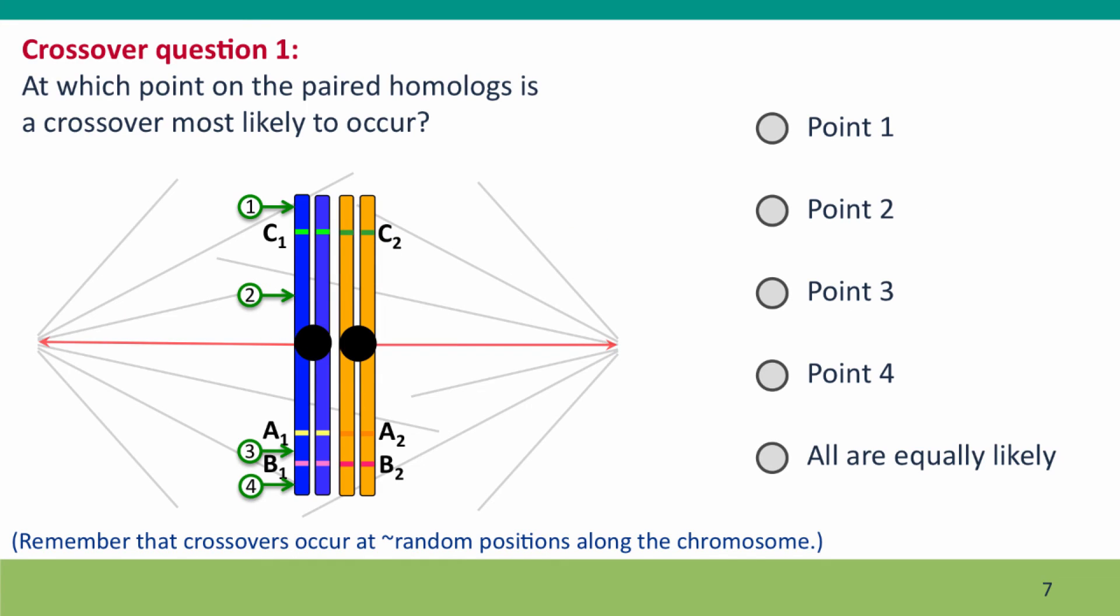And now the first question. I've indicated four points along these paired homologs, and I'm asking at which point is a crossover most likely to occur?